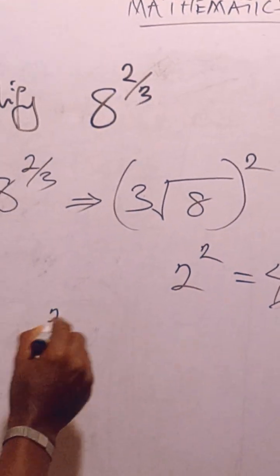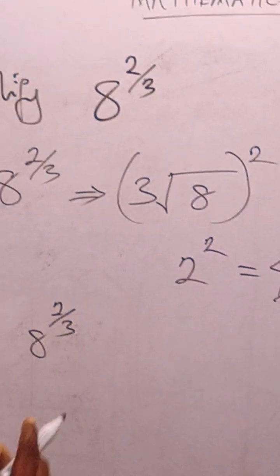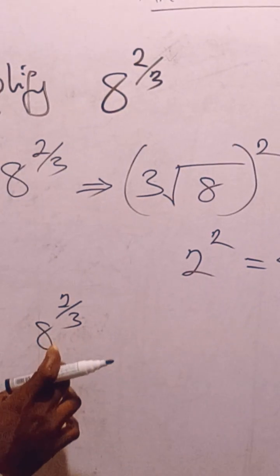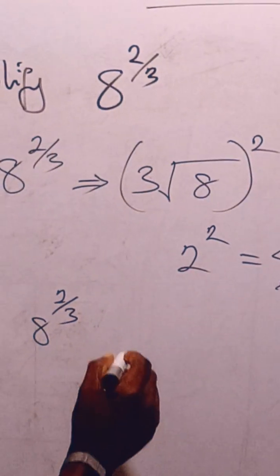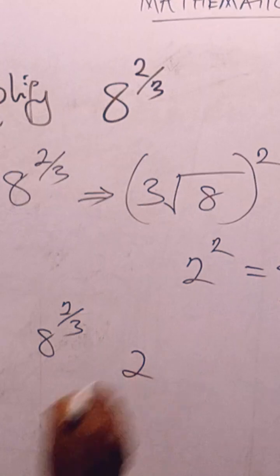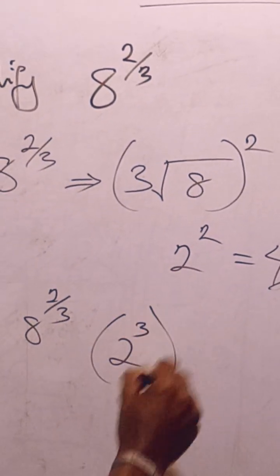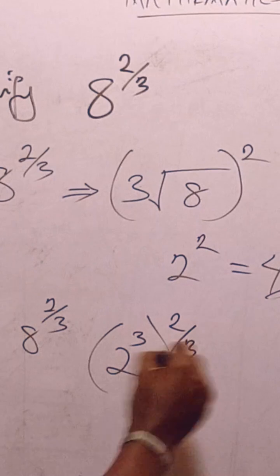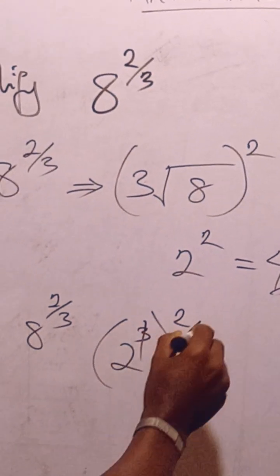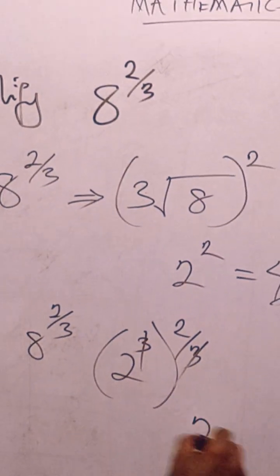8 raised to power 2/3. You get the lowest common factor of 8, which is 2, so 2 raised to power 3 times 2/3. Now this 3 will cancel this 3, you have 2 raised to power 2.